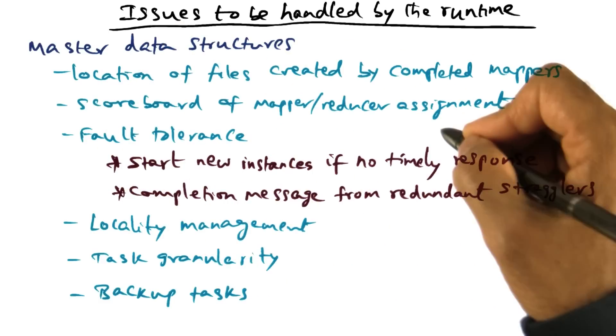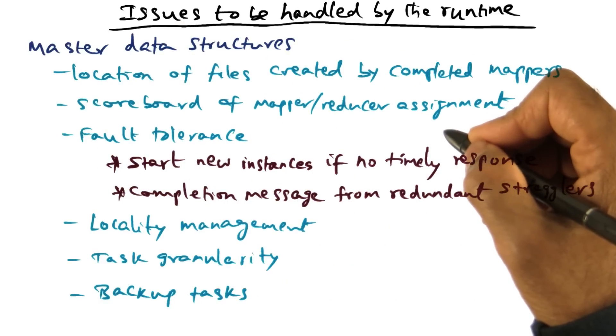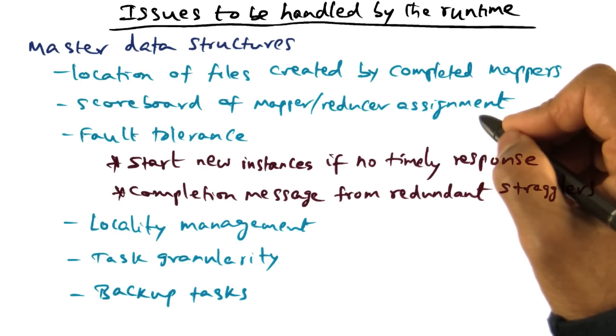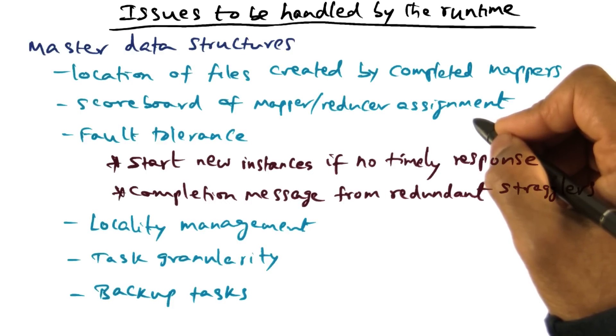It also has to keep a scoreboard of the mappers and reducers that are currently assigned to work on different splits. Because the number of machines that may be available may be less than the total number of machines that will be needed if I wanted to do all of the input m splits in parallel and all of the r output splits in parallel.